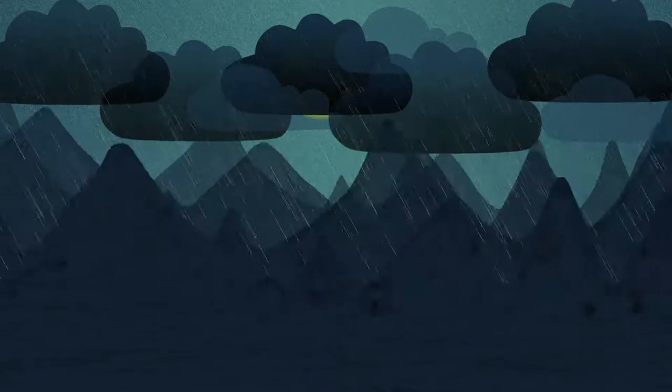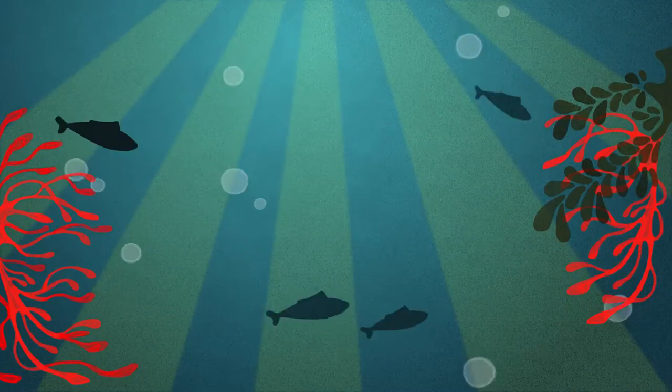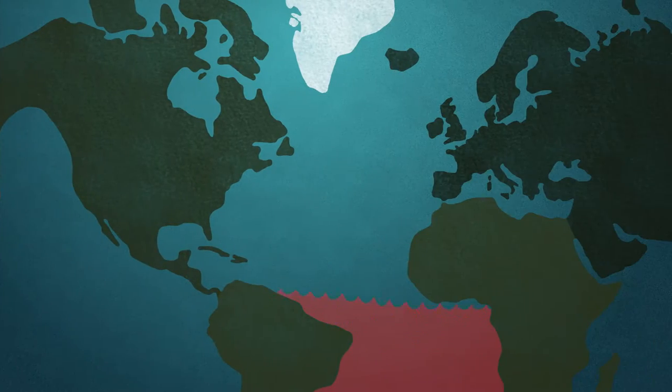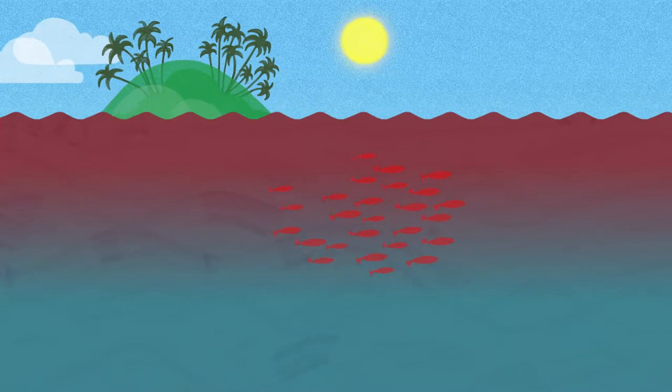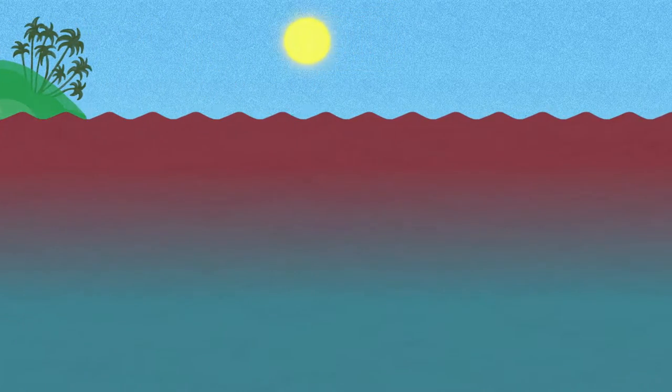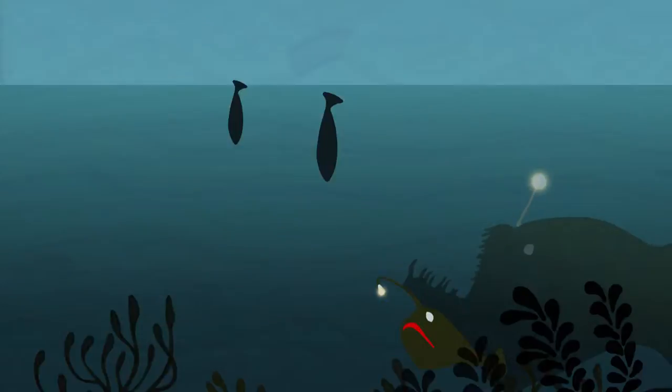The oceans play a big role in controlling global climate by distributing heat around the planet. An important region for this is the North Atlantic Ocean. Ocean currents from the tropics bring warm salty water northwards into the Arctic. Here the warm water cools down and sinks in the deep ocean.